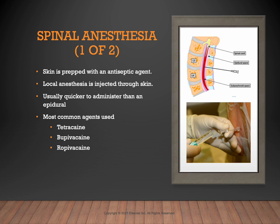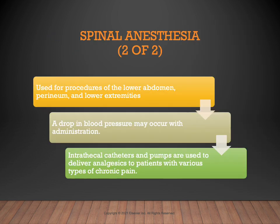Spinal anesthetic is typically used for procedures of the lower abdomen such as C-sections, surgeries of the perineum like vaginal hysterectomy or transurethral resection of the prostate or bladder tumor, and lower extremity surgeries like total hip and total knee replacements. The spinal can cause a drop in blood pressure due to vasodilation, which is something to watch for. Intrathecal catheters and pumps are sometimes used to provide pain relief for patients suffering from various types of chronic pain.